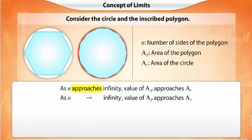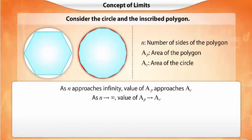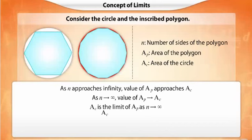Symbolically, we can denote this statement as shown. To make the symbolic representation more concise, we introduce a term known as limit. We say that AC is the limit of AP as N tends to infinity, and we can represent this limit symbolically as shown.